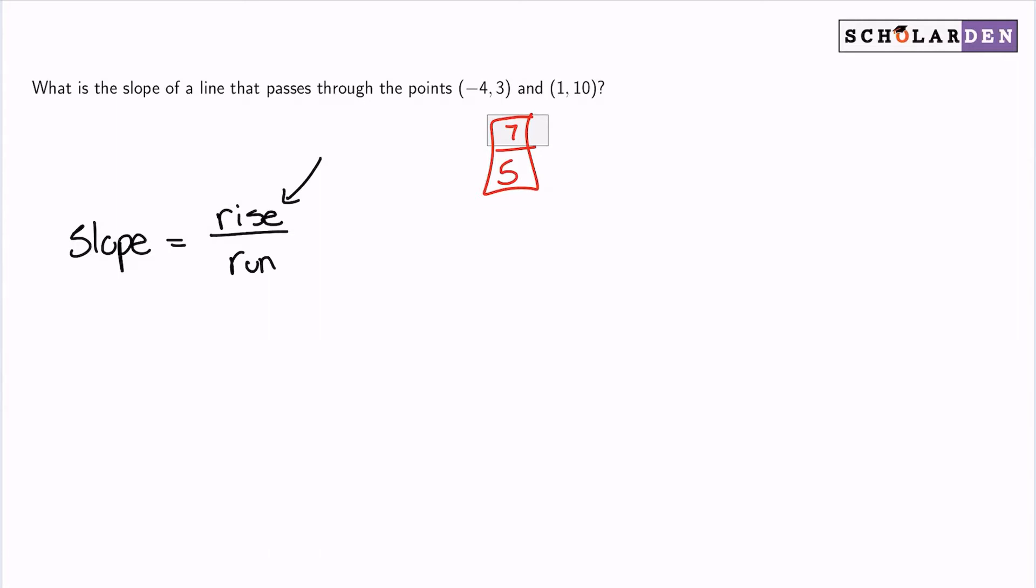Well, remember rise is just the difference in height, and what that means is the difference in the y's. So subtract the y's. And the run is how far horizontally we go, so we will subtract the x's. And that's the general rule.